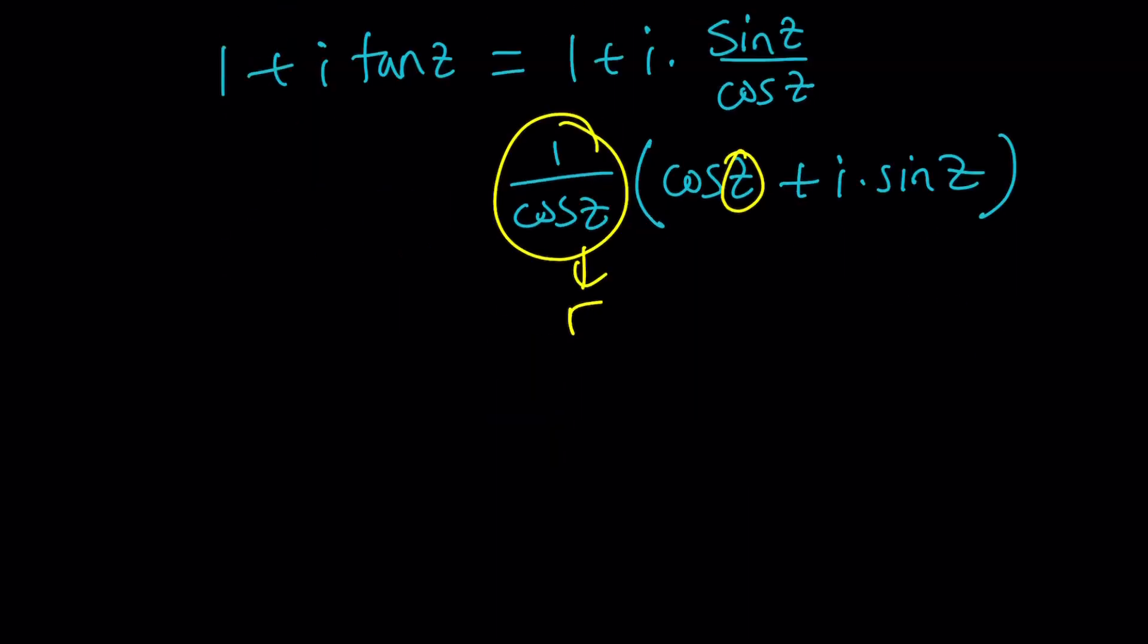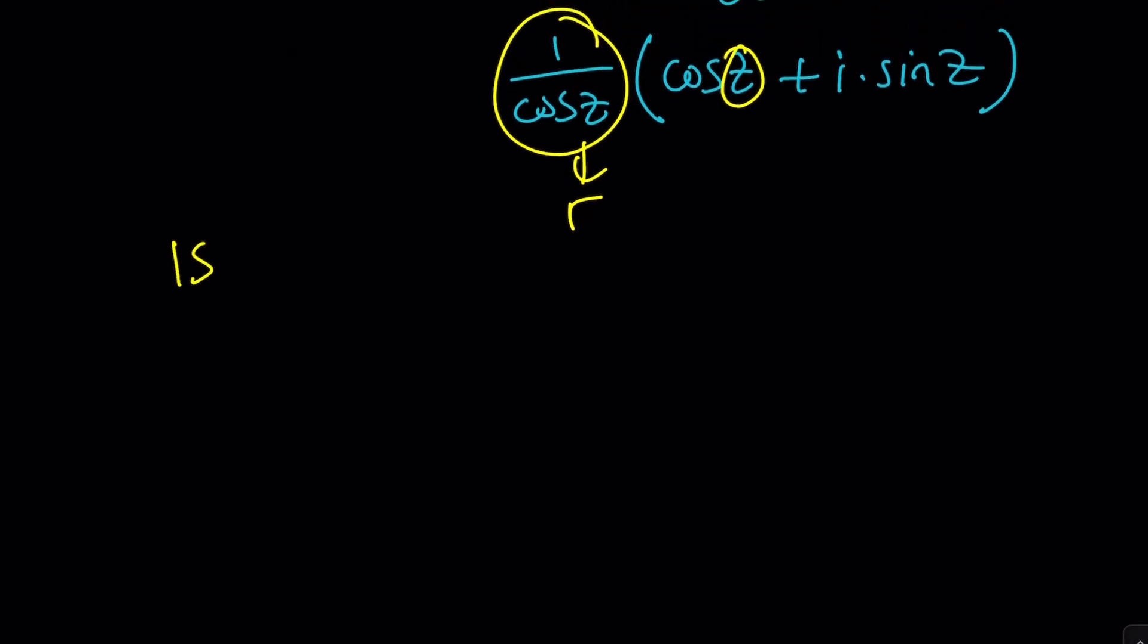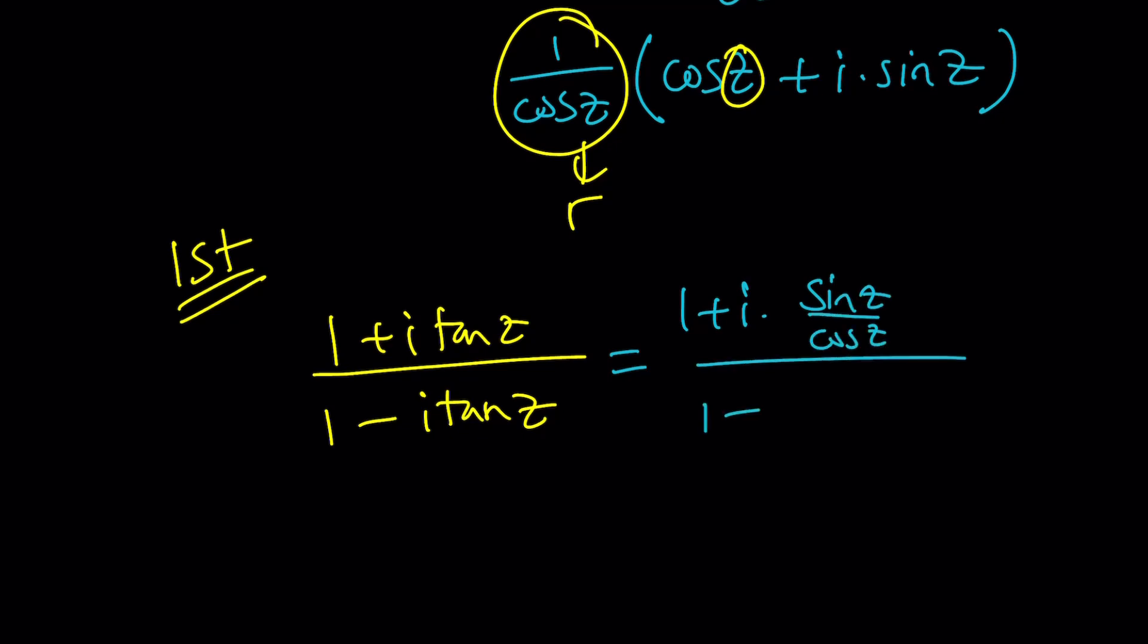So, here's how the first method works. We're going to go ahead and write these as follows. Because we have a quotient, 1 plus i tangent z divided by 1 minus i tangent z, I can use this idea to simplify this fraction. Let's do it. Write the tangent as sine over cosine.